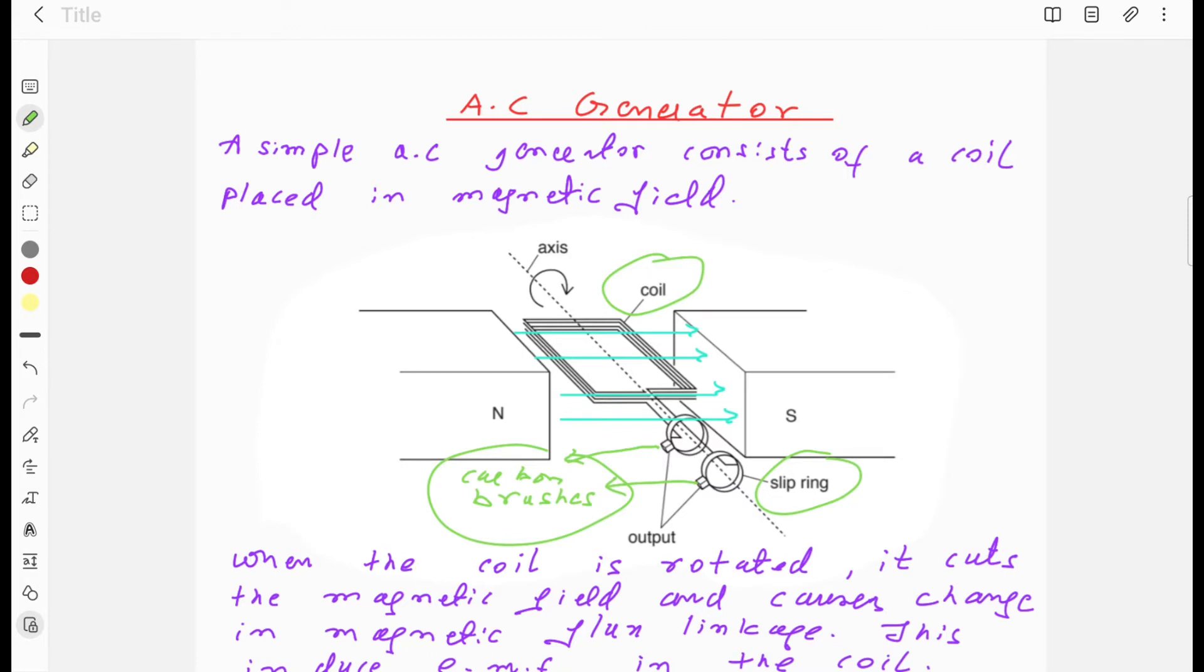The magnitude of EMF produced depends upon the rate of change of magnetic flux linkage. If you rotate the coil faster, you will get greater magnitude of induced EMF.